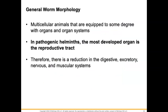General worm morphology — morphology refers to what they look like, their shape, their color, their arrangement. These are multicellular animals equipped to some degree with organs and organ systems. In pathogenic helminths, the most developed organ is the reproductive tract. There is a reduction in the digestive, excretory, nervous, and muscular systems in these organisms.